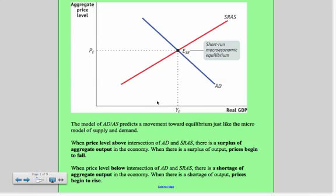If we put together the modules we've discussed, we get the short-run aggregate supply and aggregate demand curve coming together and finding equilibrium. This is very similar to what we studied in micro. When the price level rises above the intersection of AD and SRAS, there's a surplus of aggregate output in the economy. When there's a surplus of output, prices begin to fall.